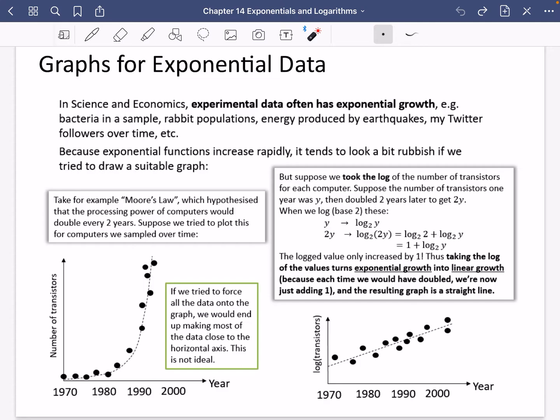When we take the log of these things, y becomes log base 2 y, and 2y becomes log base 2 of 2y, which we know with our laws, we can split this into a log base 2 of 2 and a log base 2 of y. Log base 2 of 2 is just a 1 here. So what's happened is we've doubled the computing power, the number of transistors, but it has only actually increased by plus 1. So the logged value has only increased by a plus 1. It hasn't multiplied by anything, it's increased by an addition.